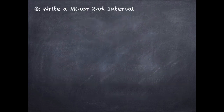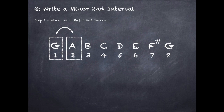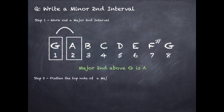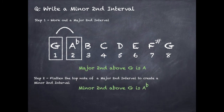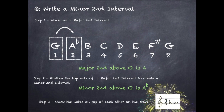To write a minor second interval: step one is to work out the major second interval. With the G major scale, we go from G to A, giving us a major second. Step two is to flatten the top note, so A becomes A flat — the minor second above G is A flat. Step three: stack the notes on the stave.